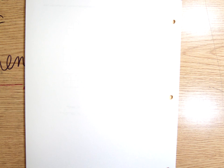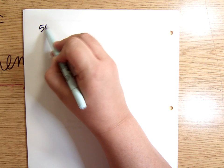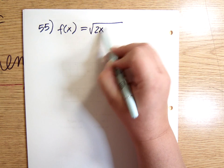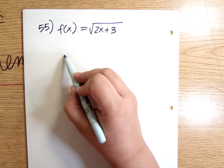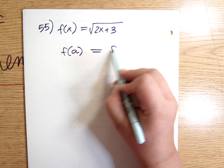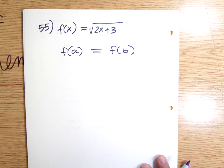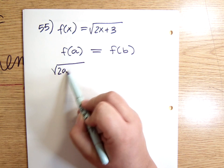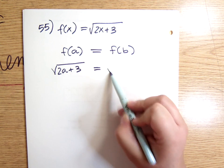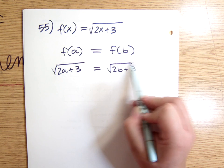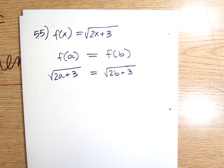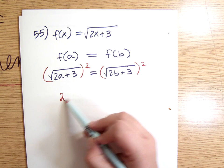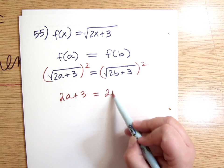Let's look at 55. f(x) equals the square root of the quantity 2x+3. So I want to see if f(a) is equal to f(b), if that necessarily means that a is going to be equal to b. So let's plug in a and b. And the first thing I would do here is I would square both sides. So this gives me 2a+3 and this gives me 2b+3.